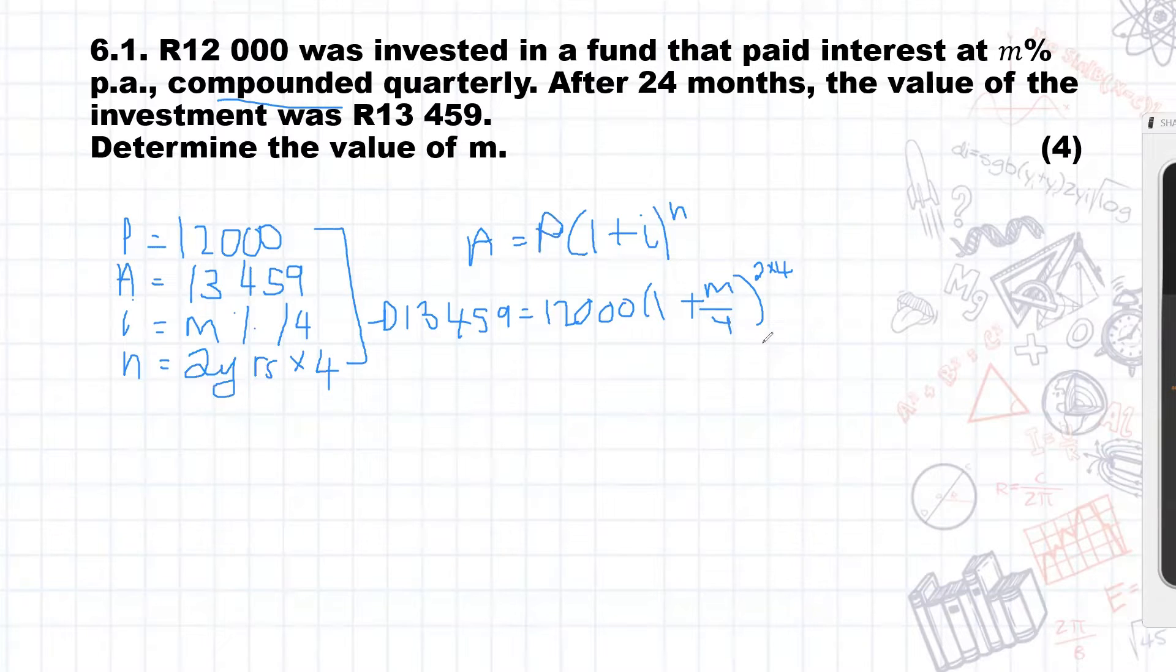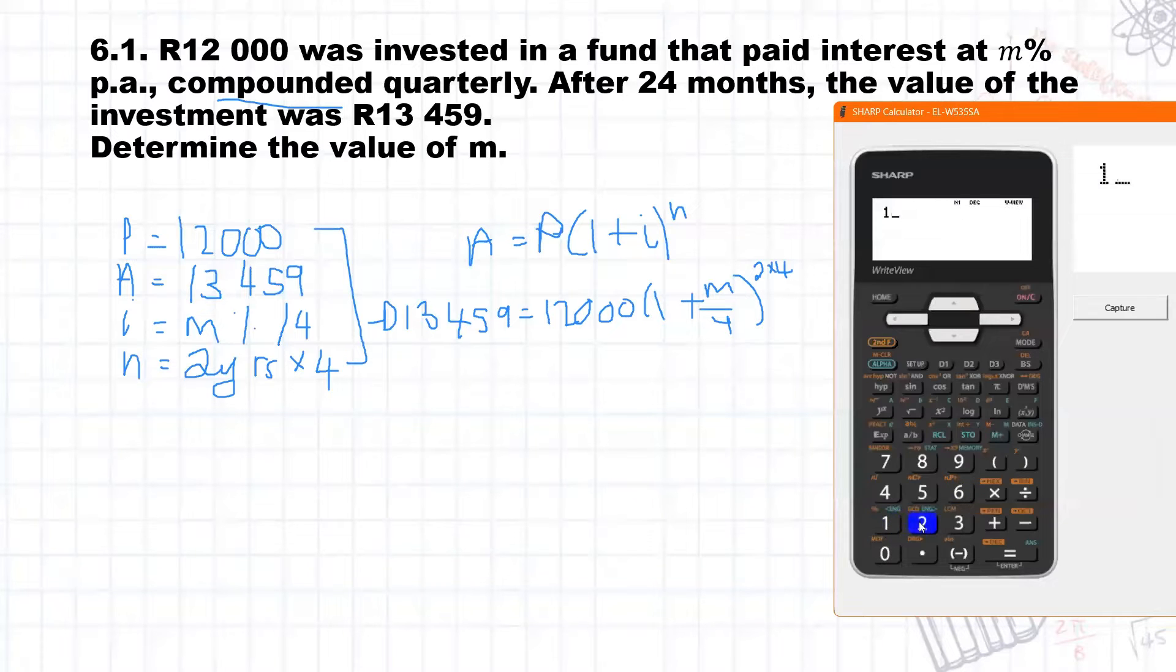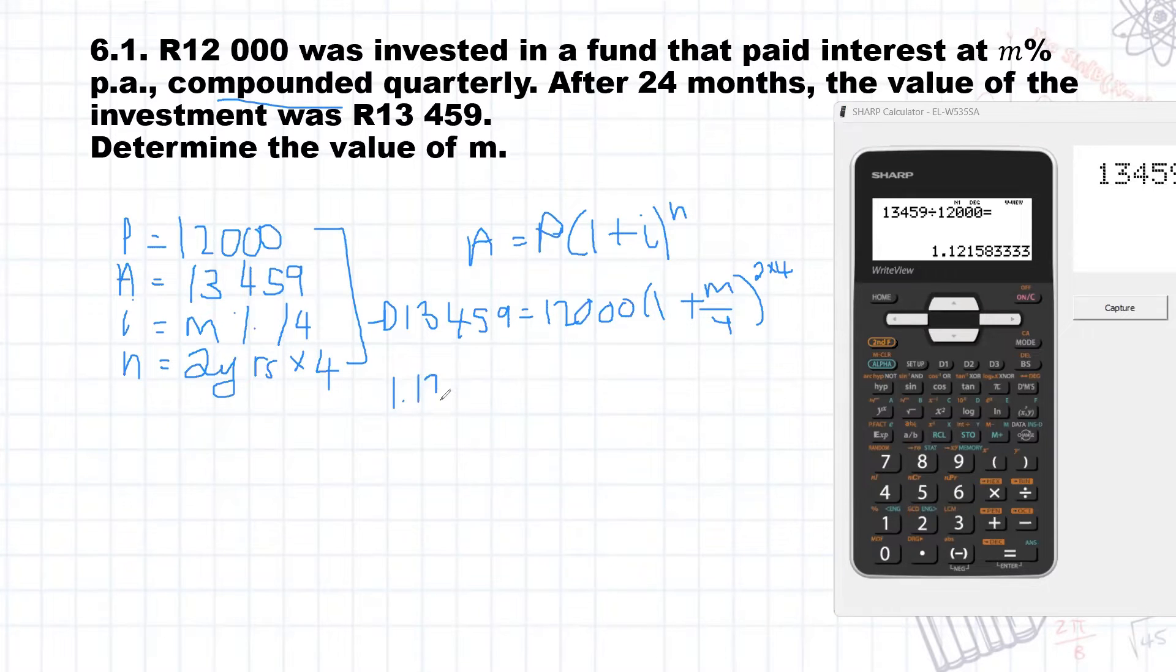Now the first step is we want to get M by itself. So the furthest thing away from M is to divide by 12,000. I'm going to pull out my trusty Sharp calculator and say 13,459 divided by 12,000, and that gives me 1.12158333. Now we never round off until the final solution. So we write down everything and use every decimal in our calculation to ensure our accuracy. It's equal to one plus M over four to the power of eight, because two times four is eight.